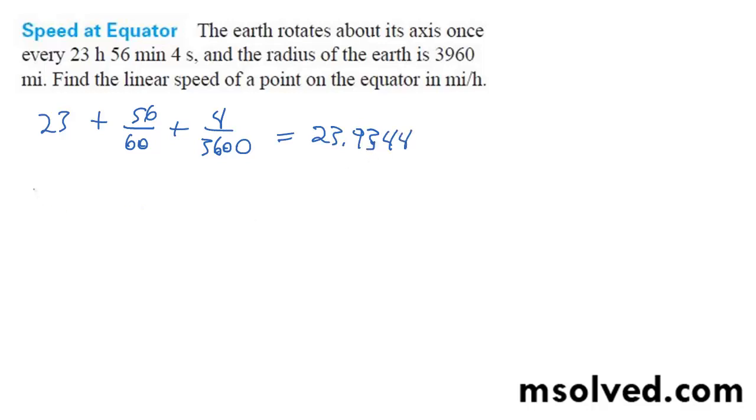All right, angular speed. So w is equal to theta divided by time. And so theta, that's going to be 2 pi times the 23.9344. And we take this times our 3,960, and we're going to end up with 1,039.6 miles an hour.